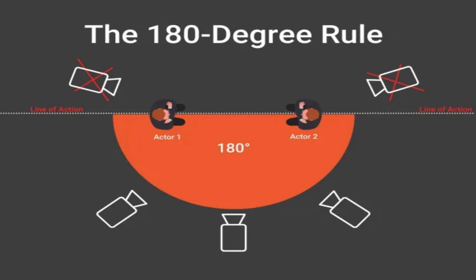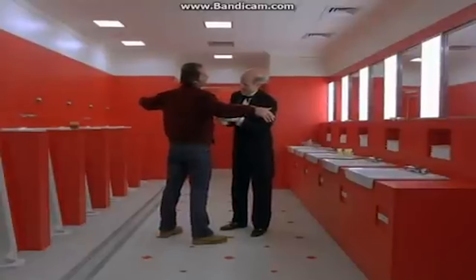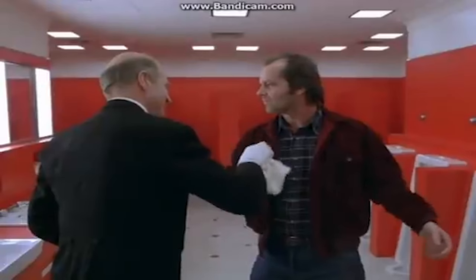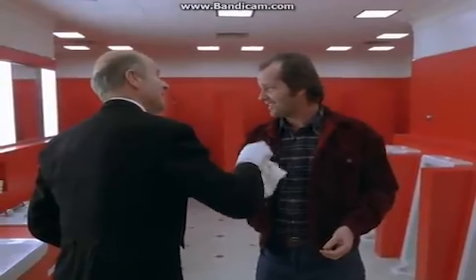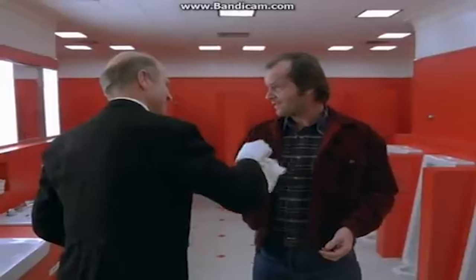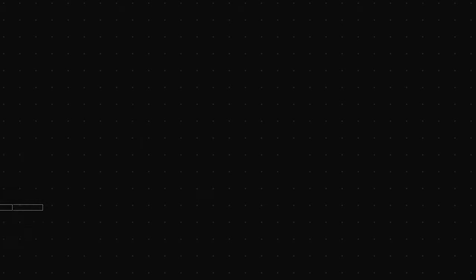It's very important to follow the 180-degree rule. Essentially, you're going to want to draw a big imaginary line on the floor of your set or stage. Take your characters or subjects and place them on the line. You need to pick one side of the line to keep your camera positioned at, and you must not cross the line at all. You can move your camera as you wish on that side of the line, but you cannot cross it, or it will confuse the viewer by taking them out of the scene.